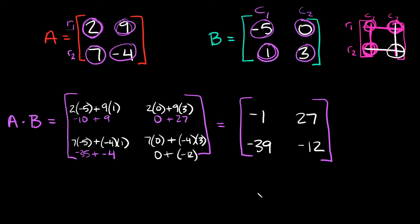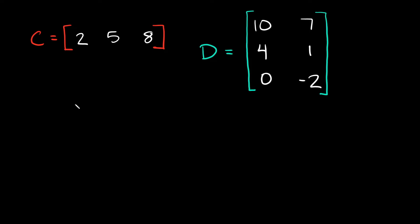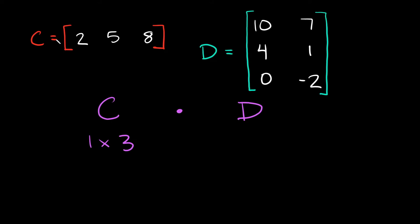Hopefully that wasn't too bad. So let's just switch up the dimensions of the matrices and try one more example. So here is our next example. If I want to multiply matrix C times matrix D, can I do that? Again, the first thing you have to do is check the dimensions. So matrix C right here is a one by three, because we have one row and three columns.